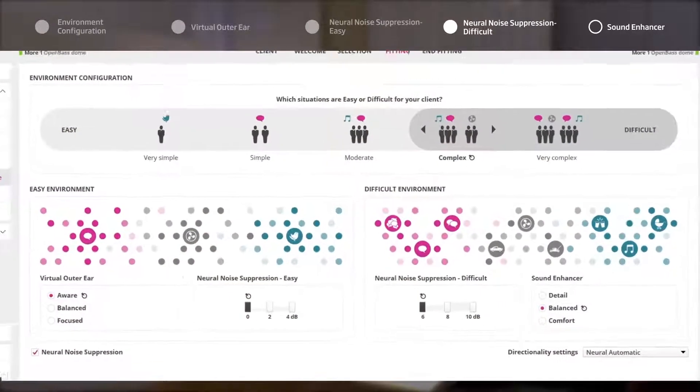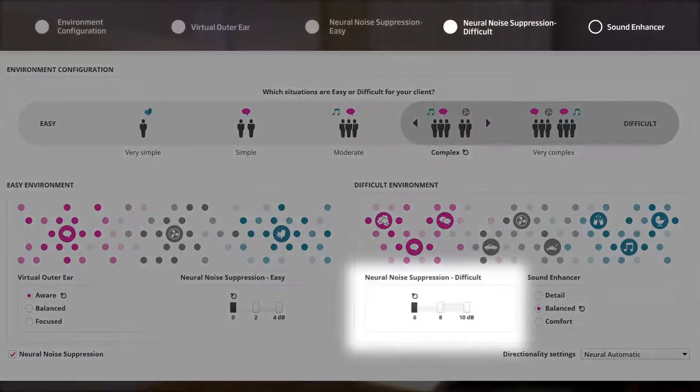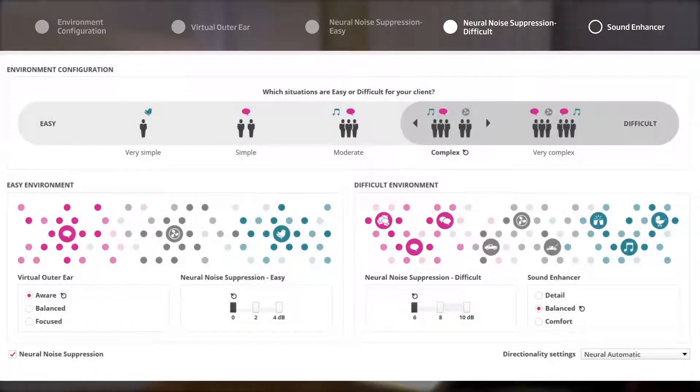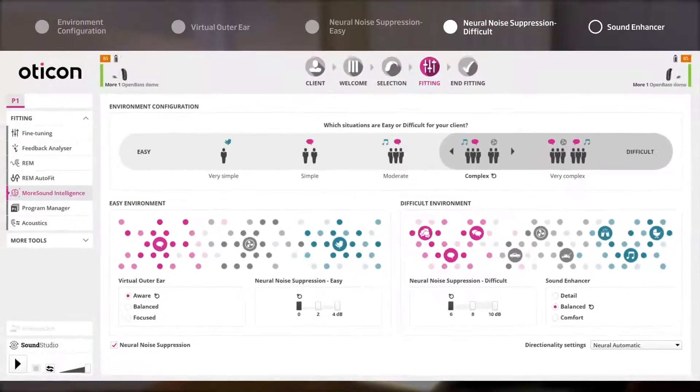Six decibels of Neural Noise Suppression has been selected for this client. If the listening situation is deemed difficult, the Neural Noise Suppression will be applied by a maximum of six decibels.